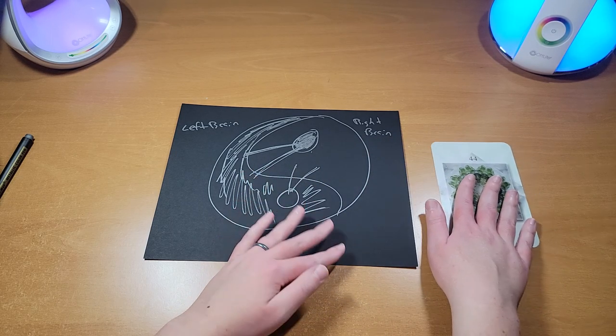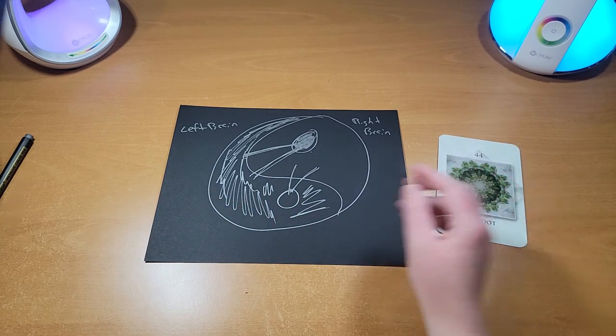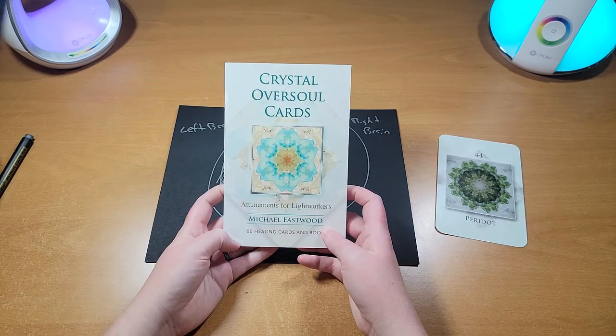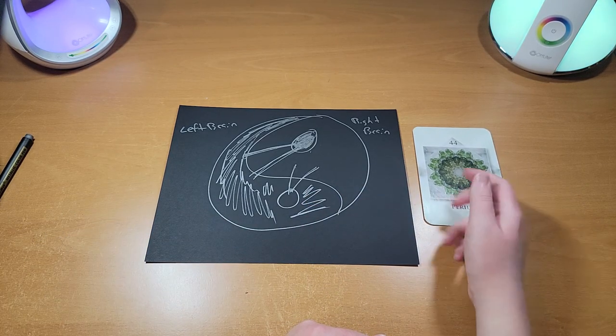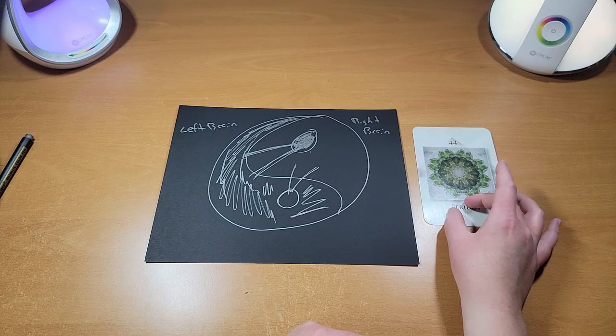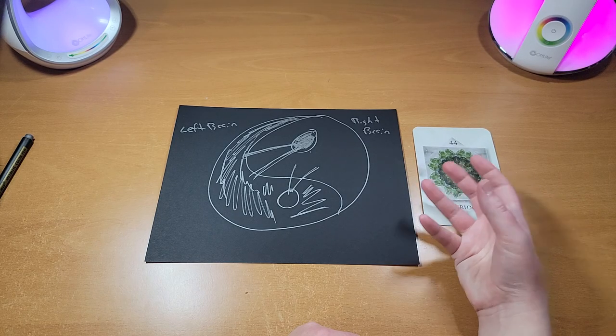All of this is because of the energetics of light and its function as a penetrating force in the universe. I had this card here because I drew this this morning and the author of this deck, Crystal Oversoul Cards, talks about how Peridot, this crystal, its oversoul, its green light is meant to penetrate directly into the center of our hearts.